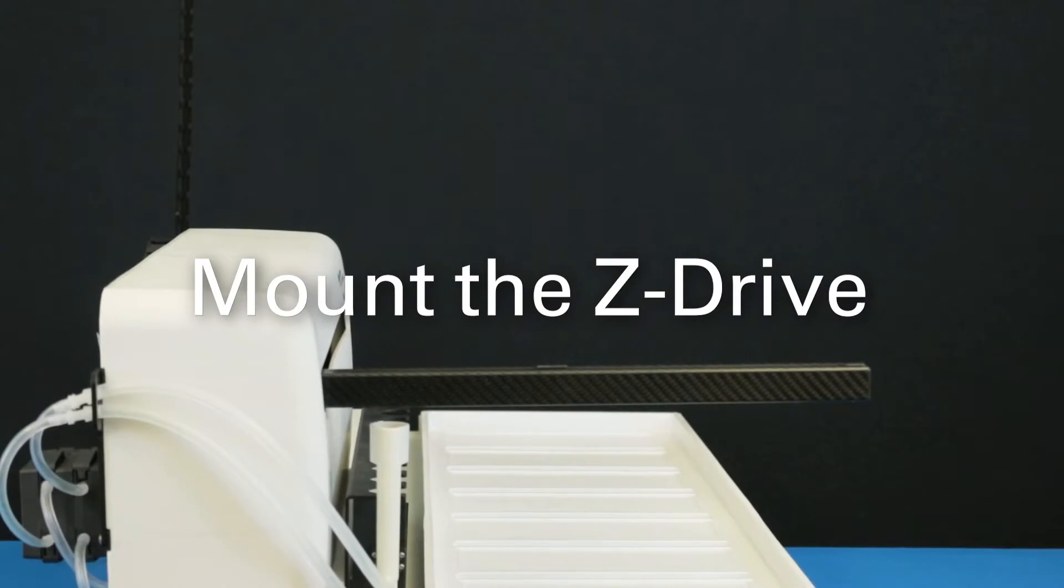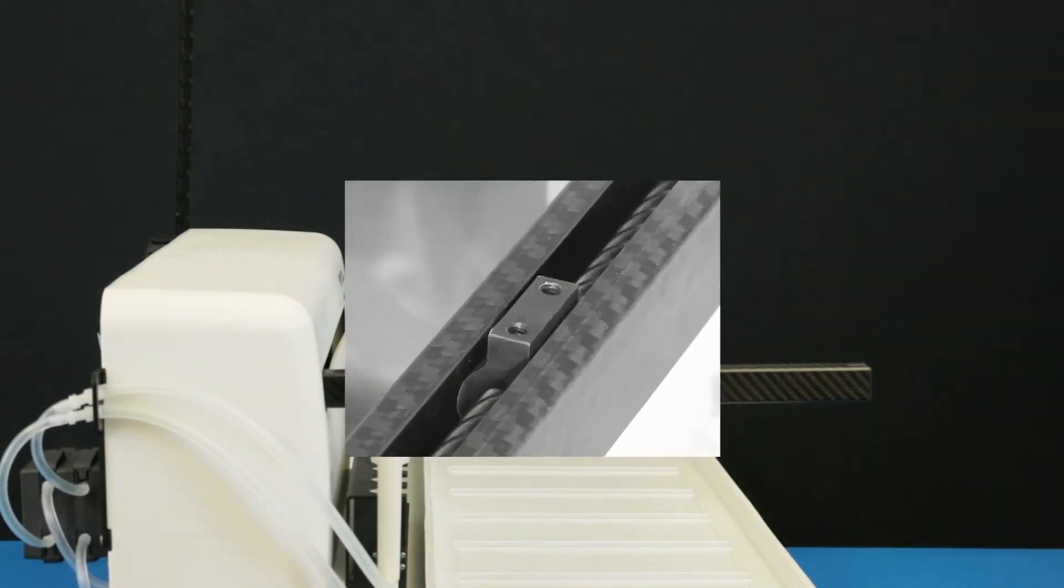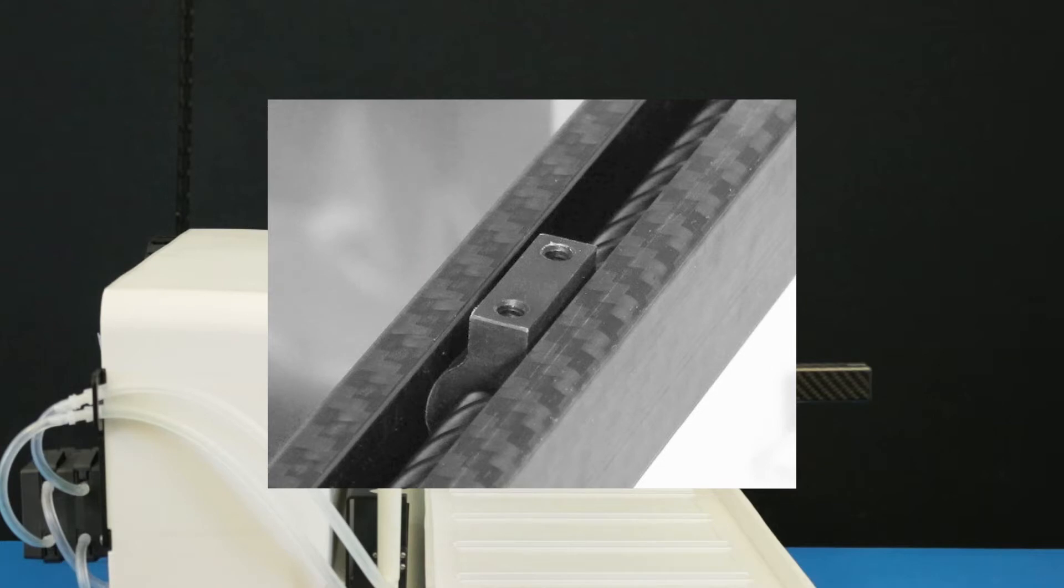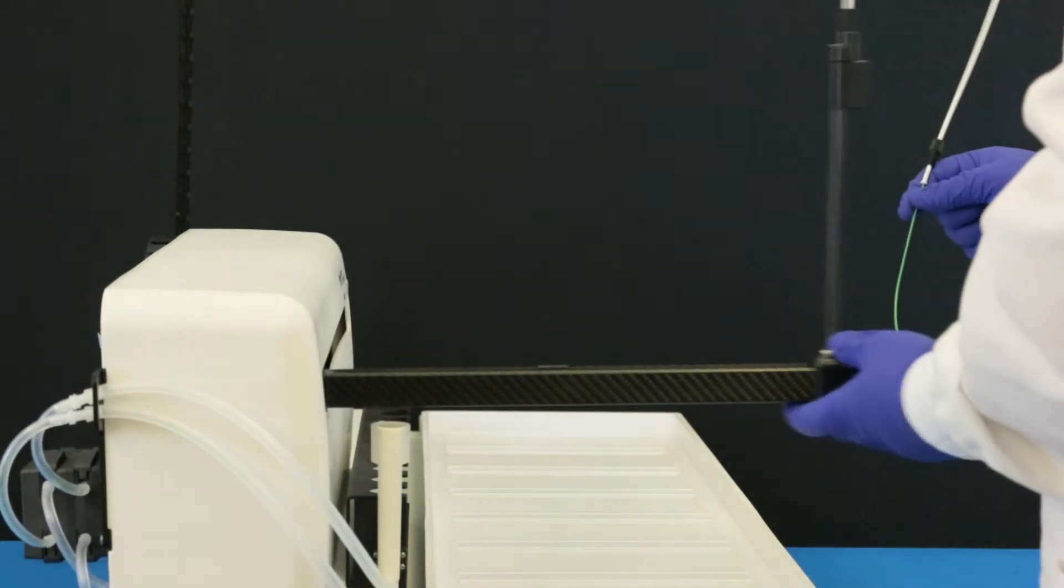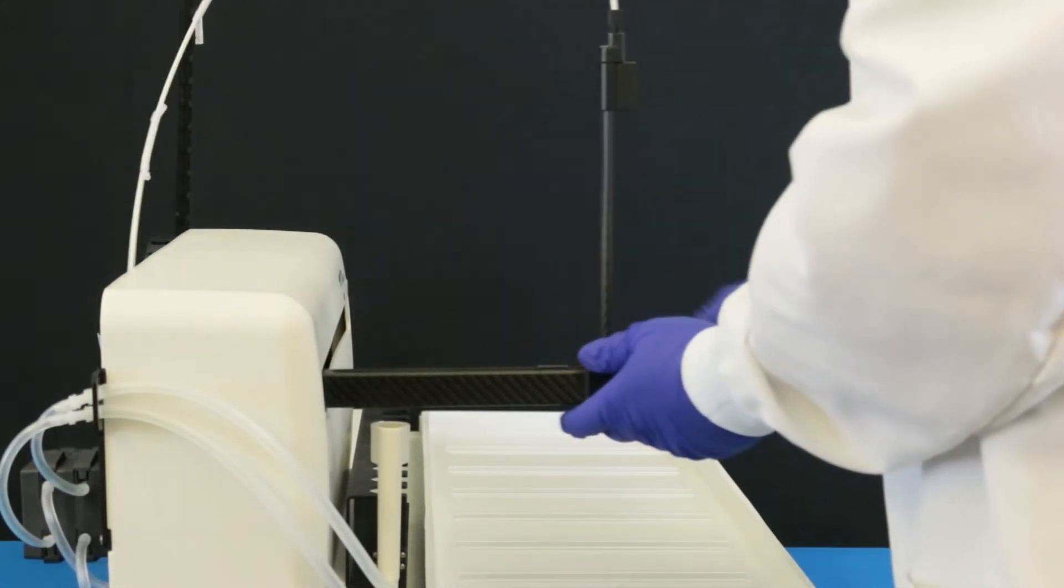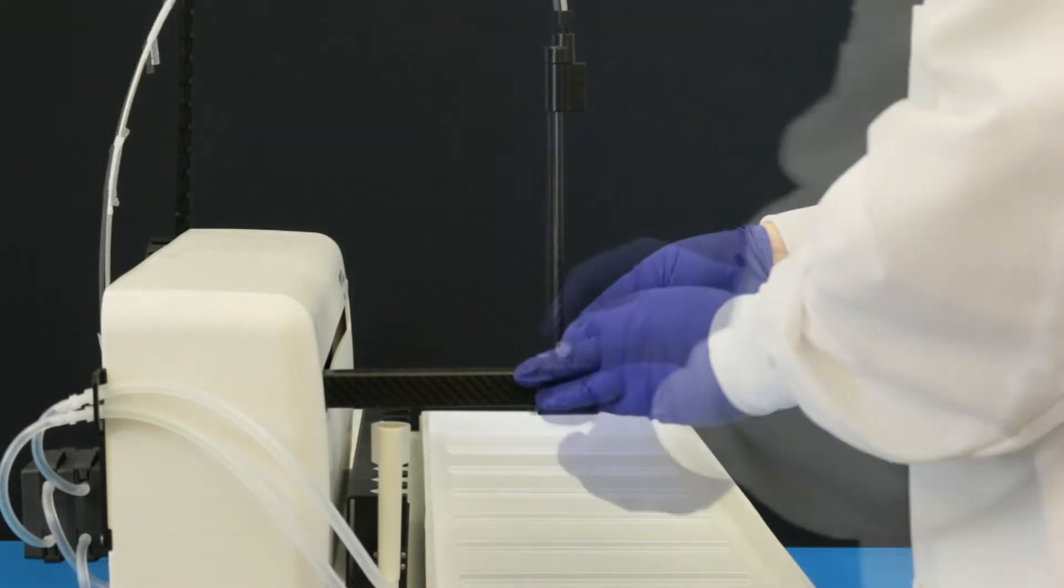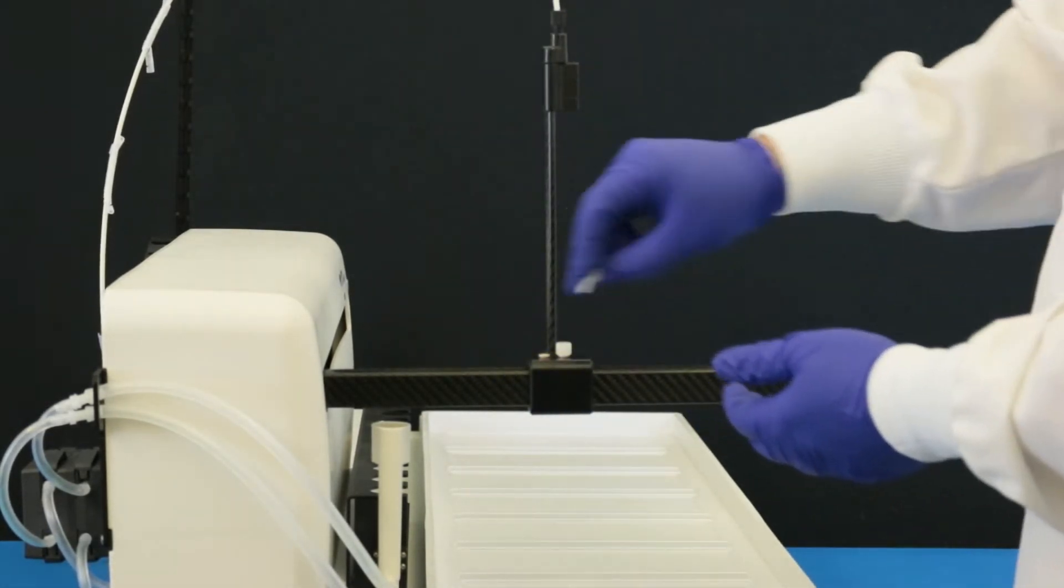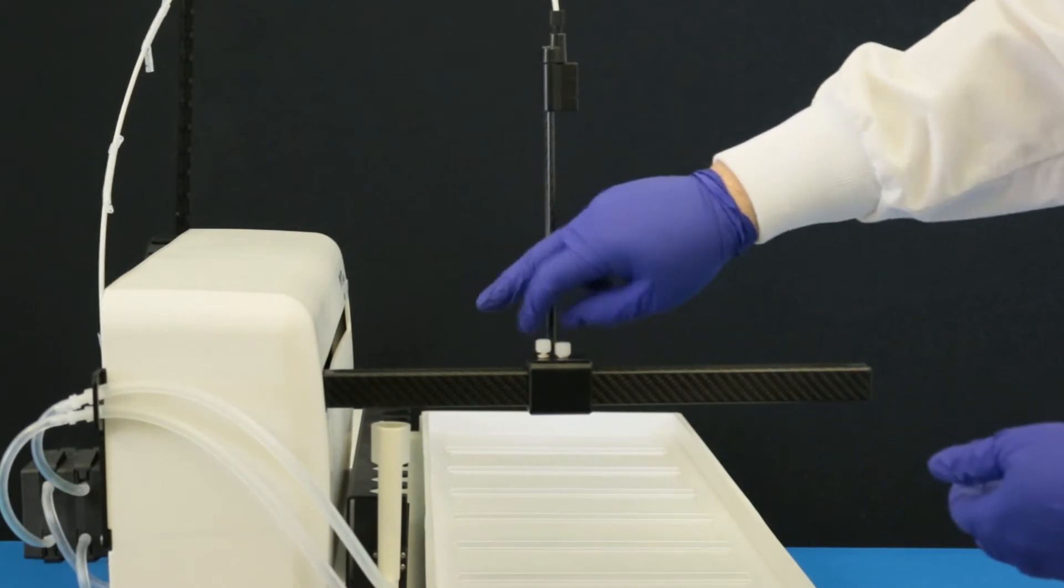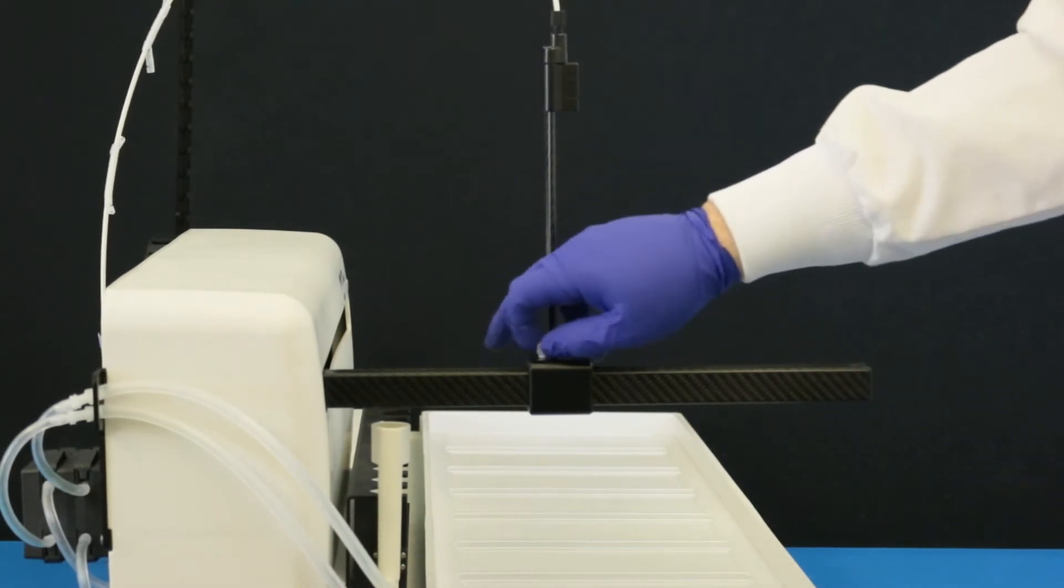Mount the Z-Drive. Find the Y-axis carriage on the arm of the Auto Sampler. Slide the Z-Drive onto the arm until the two holes align with the matching holes in the Y-axis carriage. Secure the Z-Drive to the carriage using two thumb screws. Tighten the thumb screws using your fingers.